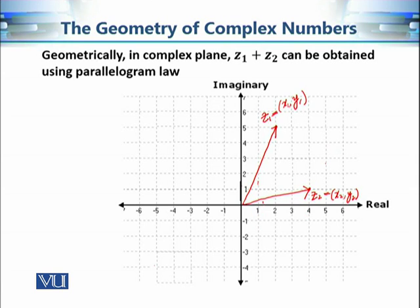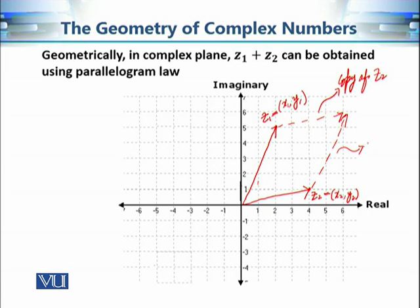We shift vector z2 to the tip of z1 — this is basically a copy of z2. Similarly, the vector corresponding to z1 can be translated to the tip of z2 — this is a copy of z1. This forms the parallelogram. The addition of these two vectors is the diagonal of this parallelogram, which is z1 plus z2.